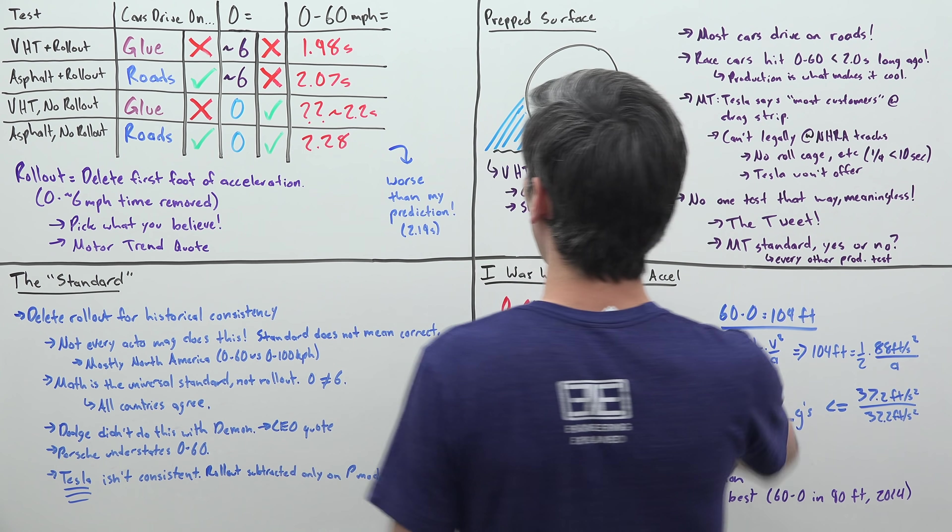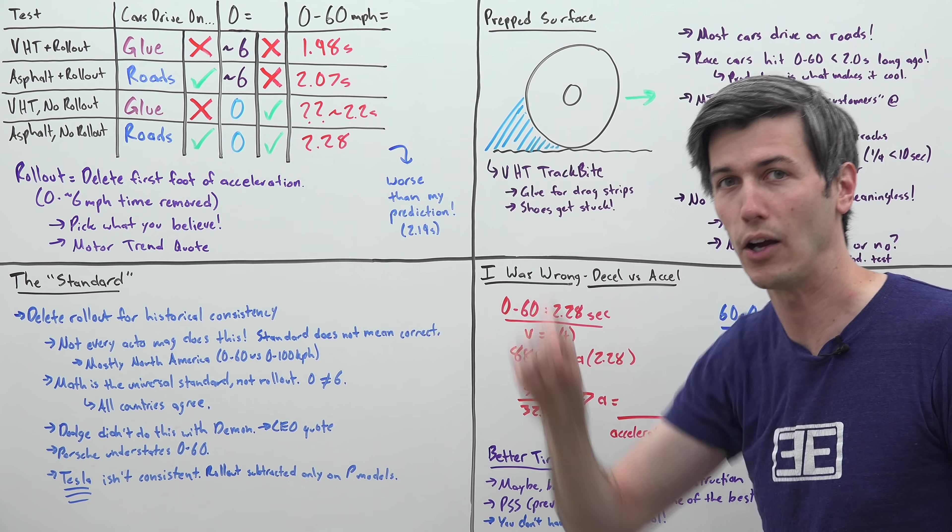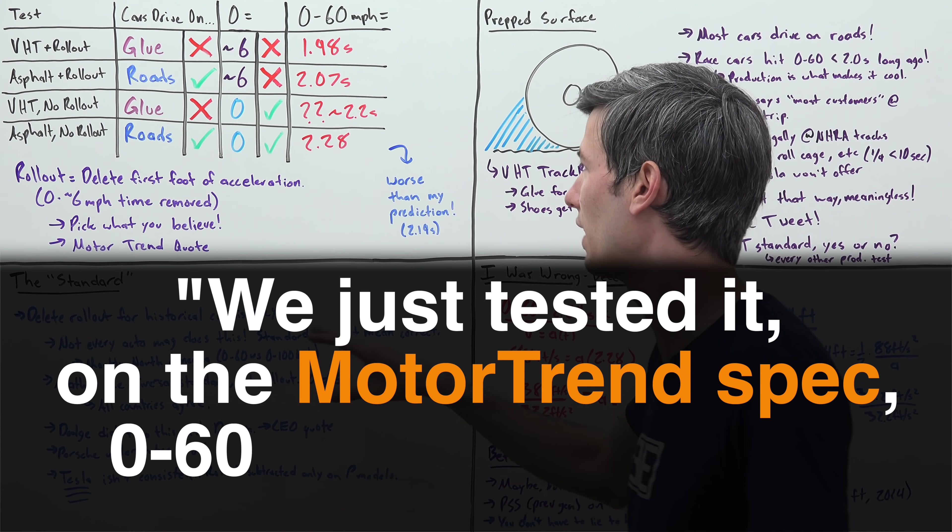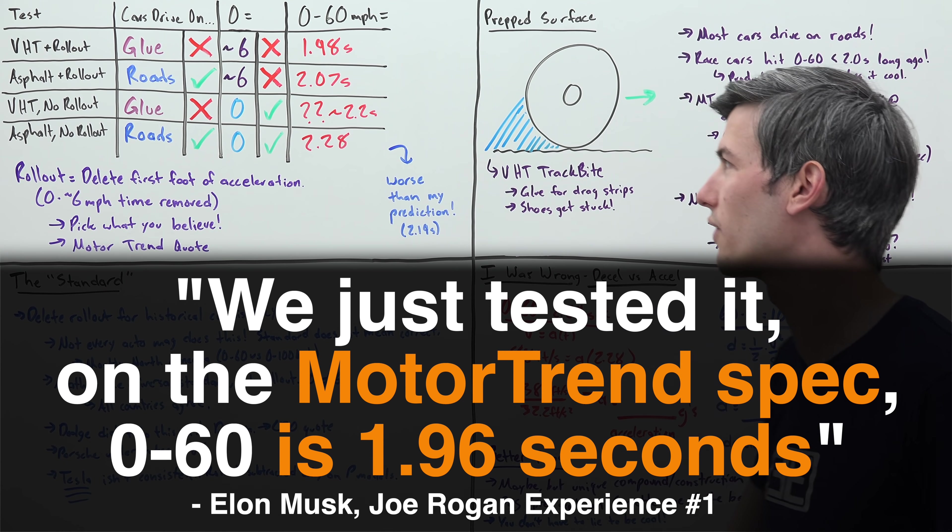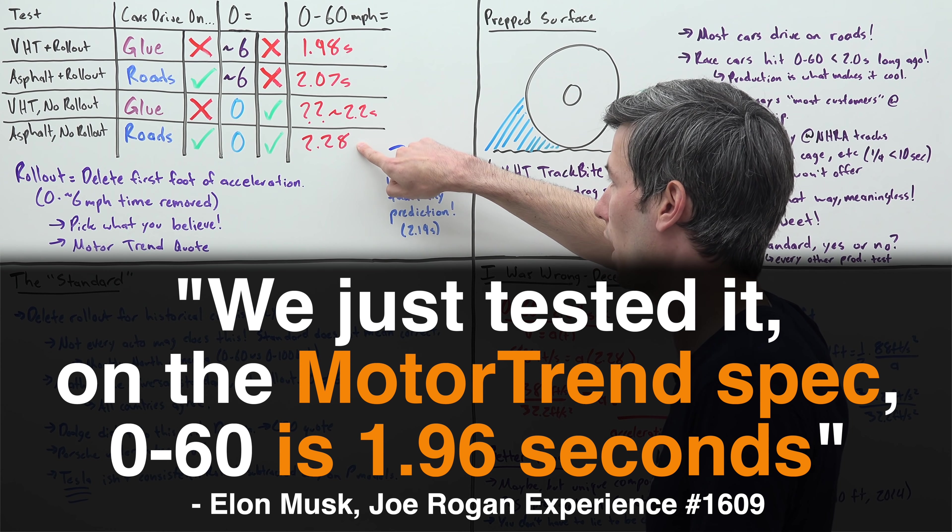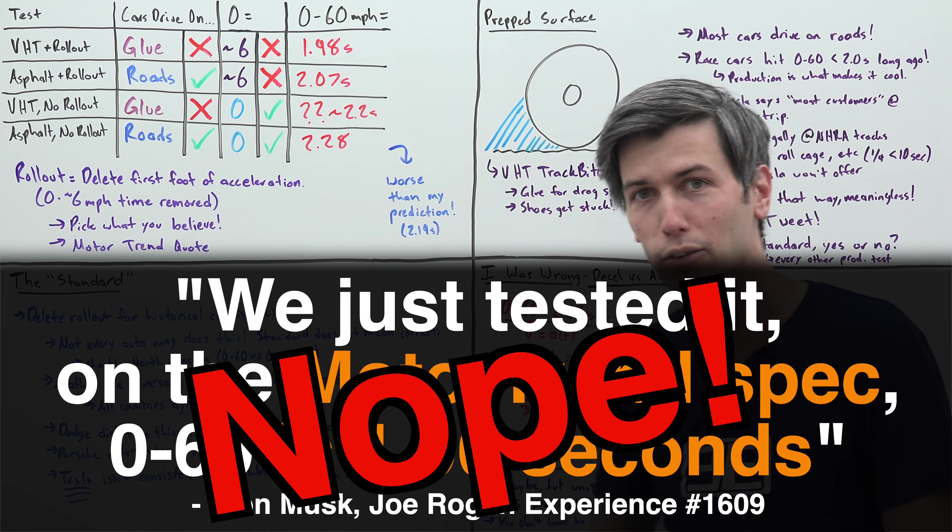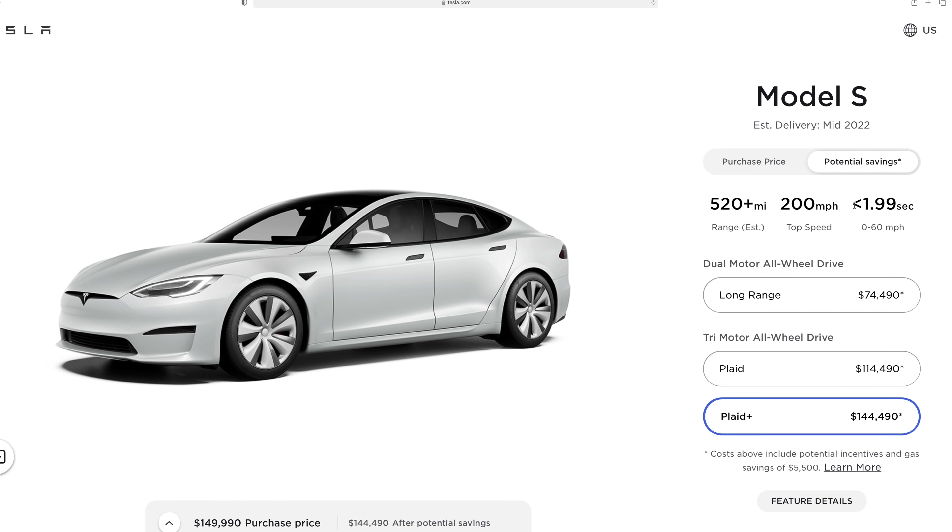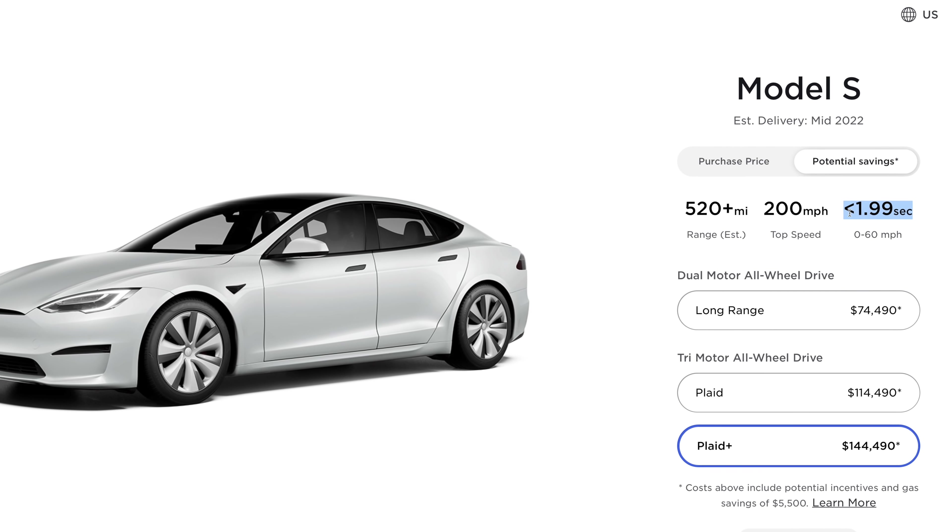If you want to believe Motor Trend's standard for how they test 0 to 60 times, that number is 2.07 seconds. I don't agree with their standard, and if you don't agree with that standard, the actual 0 to 60 time is 2.28. Either way, whichever one you pick, the 0 to 60 is not under two seconds.